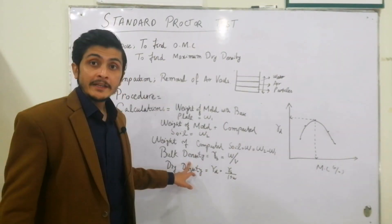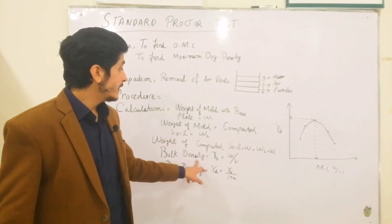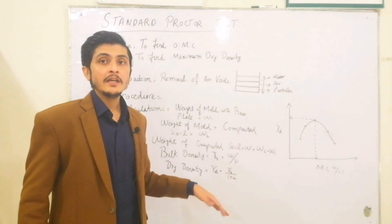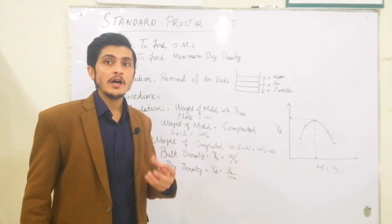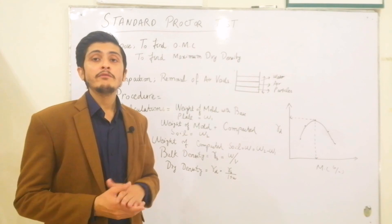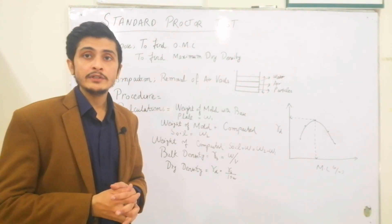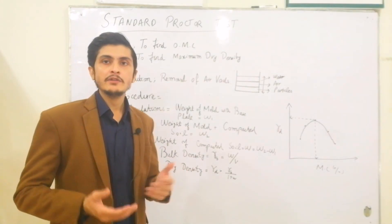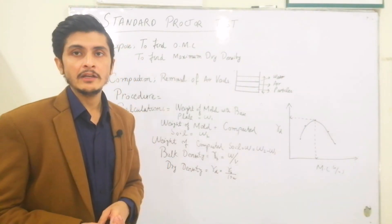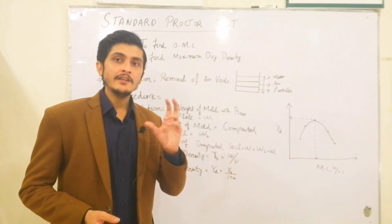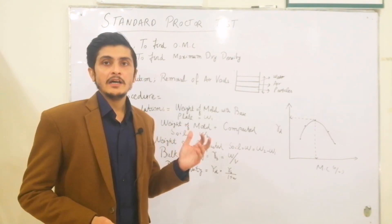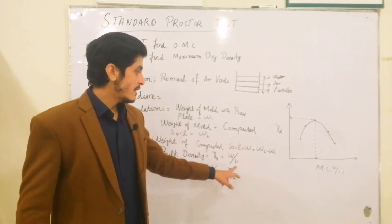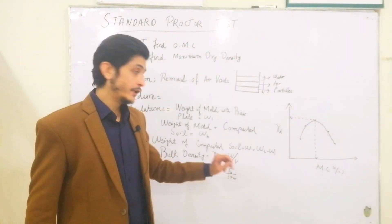Then find the bulk density. Bulk density gamma_B equals W divided by V, where V is the volume of the mold. If the diameter of the mold is 4 inches and the height is around 5 to 6 inches — measure it in the lab — find the cross-sectional area and multiply by height to get the volume.